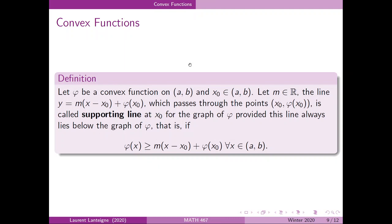Now let's introduce a new definition. Let phi be a convex function on the open interval (a, b), let x_0 be a point in that interval, and let m be a real number. We call the line y equal to m times (x minus x_0) plus phi(x_0) — which passes through the point (x_0, phi(x_0)) — a supporting line at x_0 for the graph of phi, provided this line always lies below the graph of phi, that is phi(x) is greater than or equal to the supporting line for every x in (a, b). Geometrically, the supporting line touches the convex function at x equal to x_0 and lies below the graph for all other points.